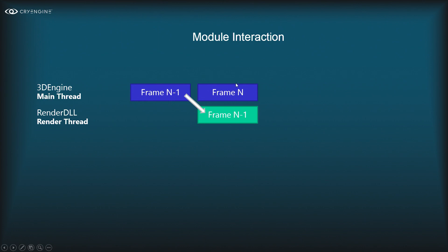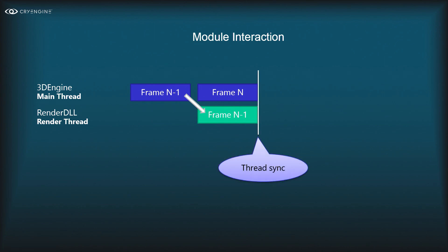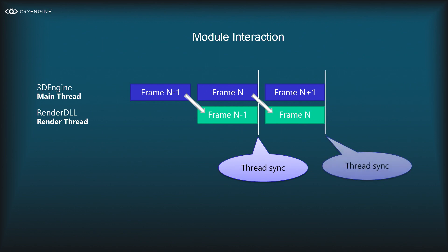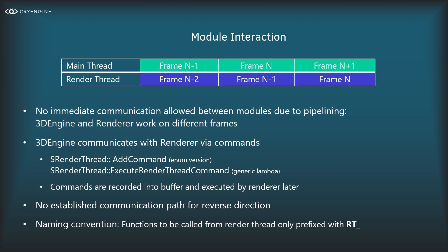The 3D engine works mostly on the main thread, and the renderer works mostly on the render thread. They overlap — the 3D engine prepares a frame while the renderer simultaneously renders a frame. After both finish, we sync the threads to avoid problems. The 3D engine waits until the render thread finishes rendering the previous frame and vice versa. This cycle — prepare frame, render previous frame, thread sync — repeats every frame.